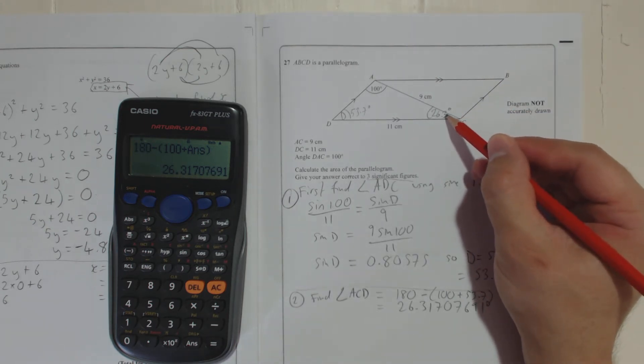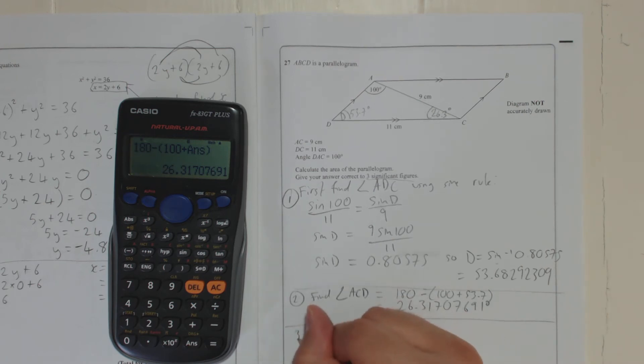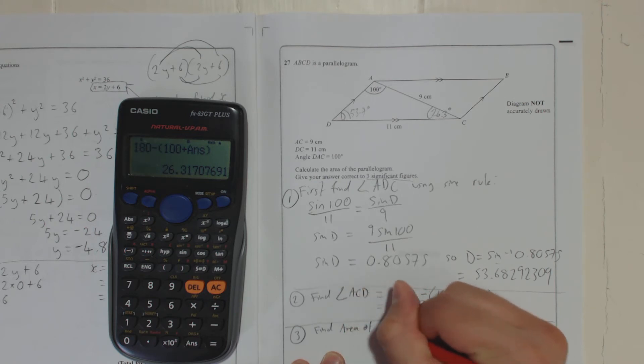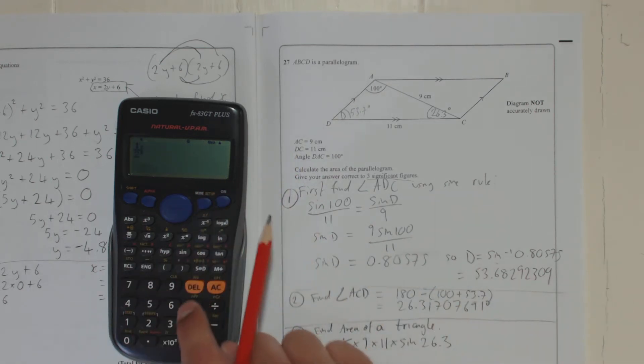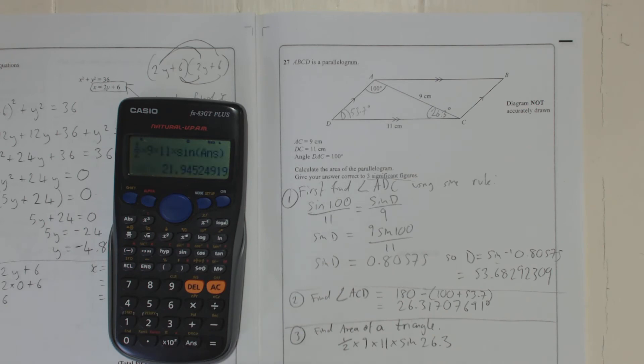So now you've got that, you can find the area of one triangle. Find area of a triangle, which is, again, written at the front, is half times the two sides around the angle, 9 times 11 times sine of the angle itself, 26.3. So I'm going to write that in, so 1 half times 9 times 11 times sine 26.3, but again, that was the last answer in my calculator, so I'm going to use that, and that gives 21.94524919.